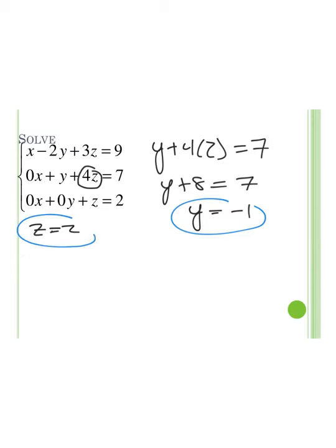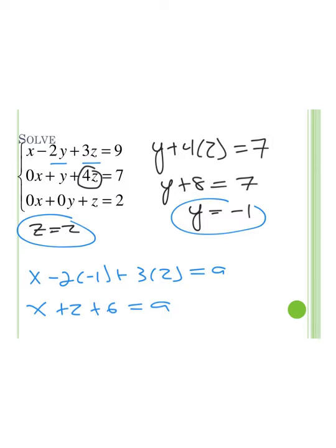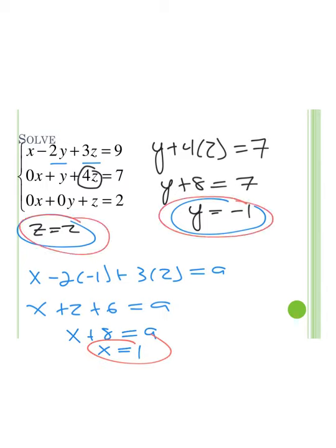Since we now know z and y, we plug them into the first equation: x minus 2 times negative 1 plus 3 times 2 equals 9. Simplifying, x plus 2 plus 6 equals 9, so x plus 8 equals 9. Subtracting 8 on both sides, x equals 1. We now have x equals 1, z equals 2, and y equals negative 1. We can plug these into another equation to verify we are correct.